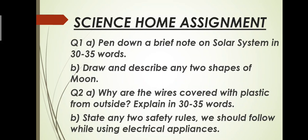The A part of first question is pen down a brief note on solar system in 30 to 35 words. As we have discussed the chapter The Moon and The Stars in your science book page number 126, there is a topic the solar system. You have to write down the definition of solar system and the name of the nine planets of solar system. So this will be the brief note.